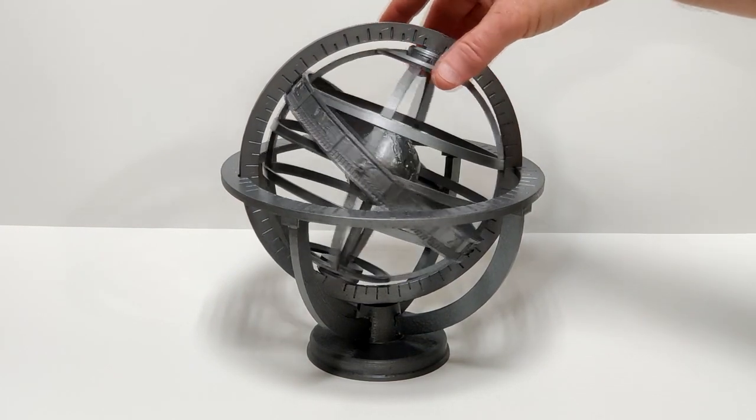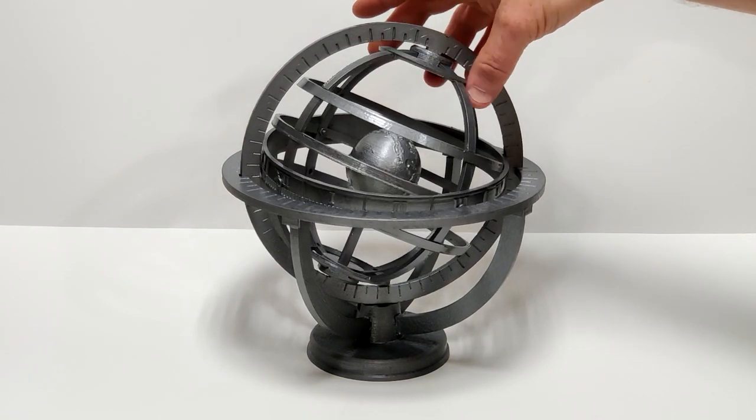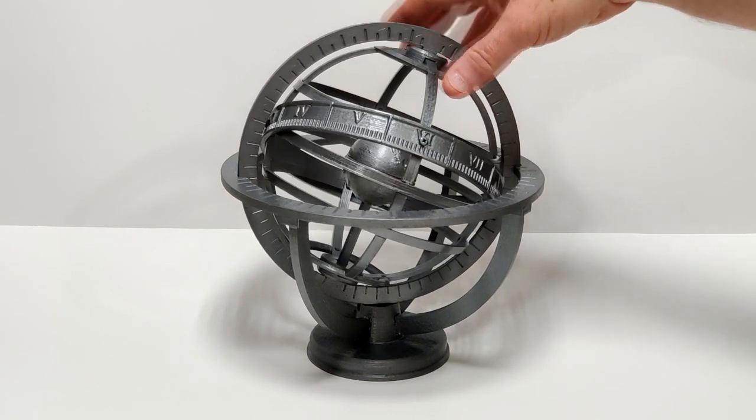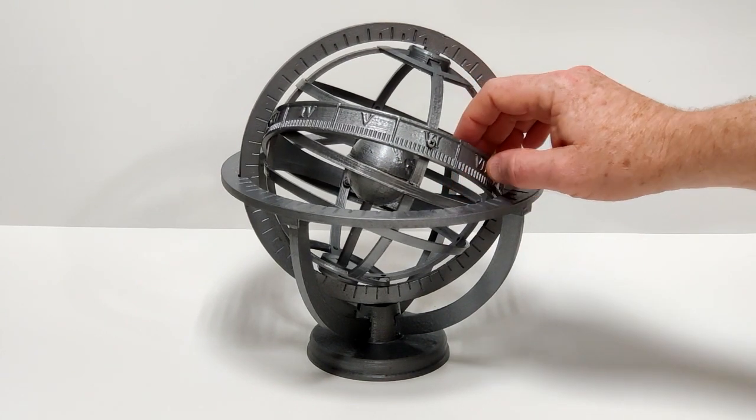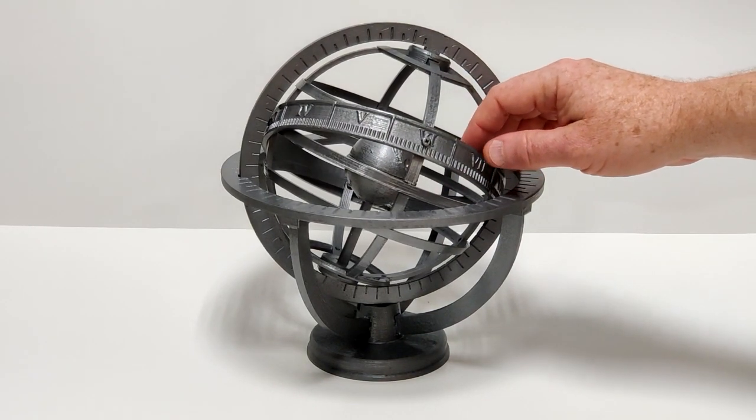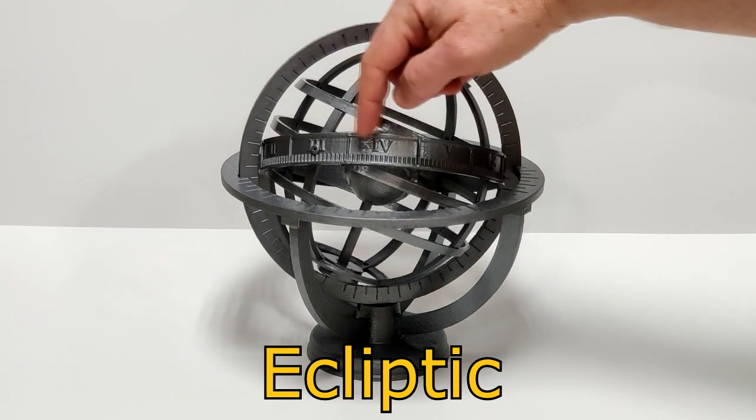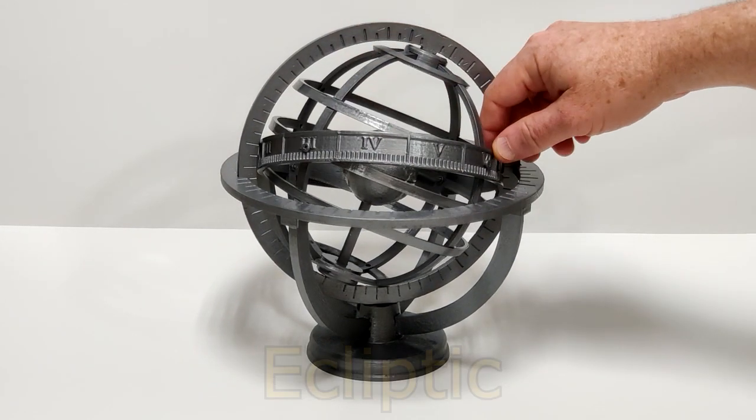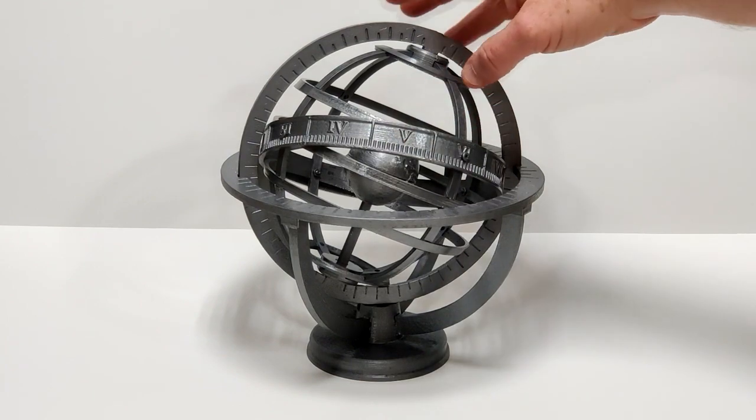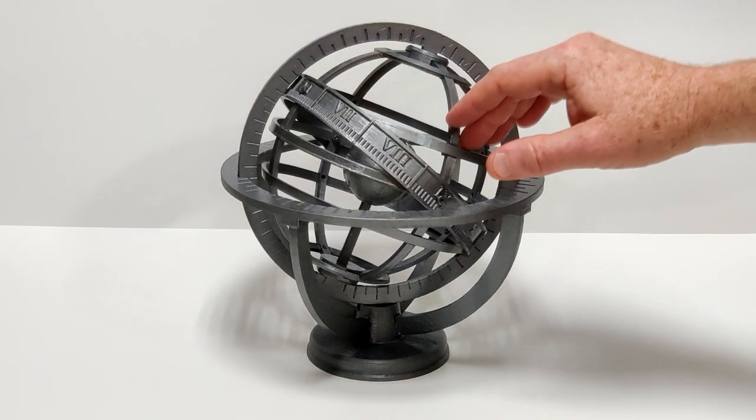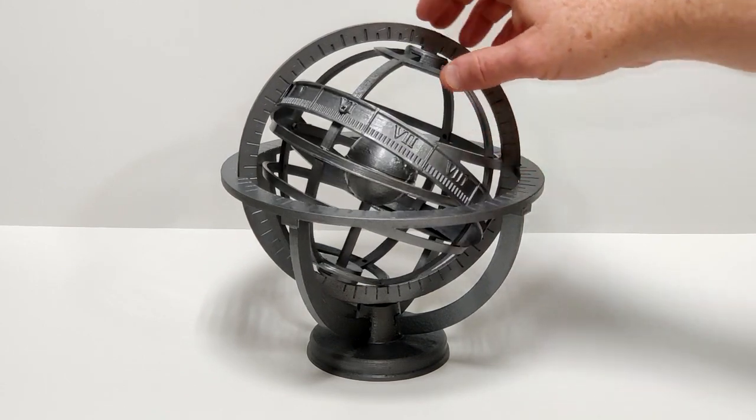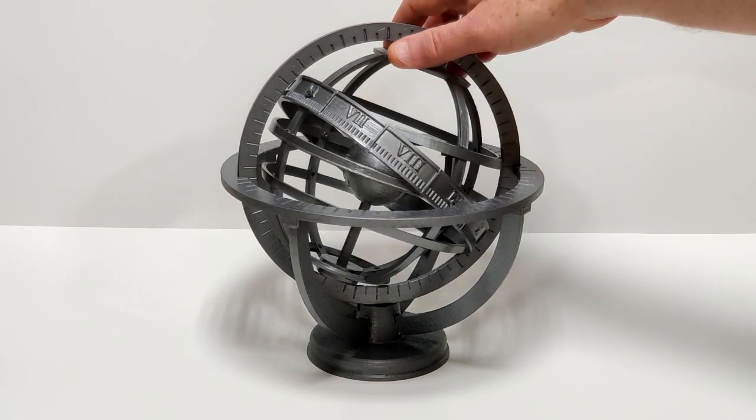Rotating inside of the meridian are a bunch of other rings. This largest one here, the most prominent, is called the ecliptic ring and it has roman numerals on it indicating the various months and dashes indicating the various days. It is tilted relative to the other rings and we'll run into what that means in a little bit.